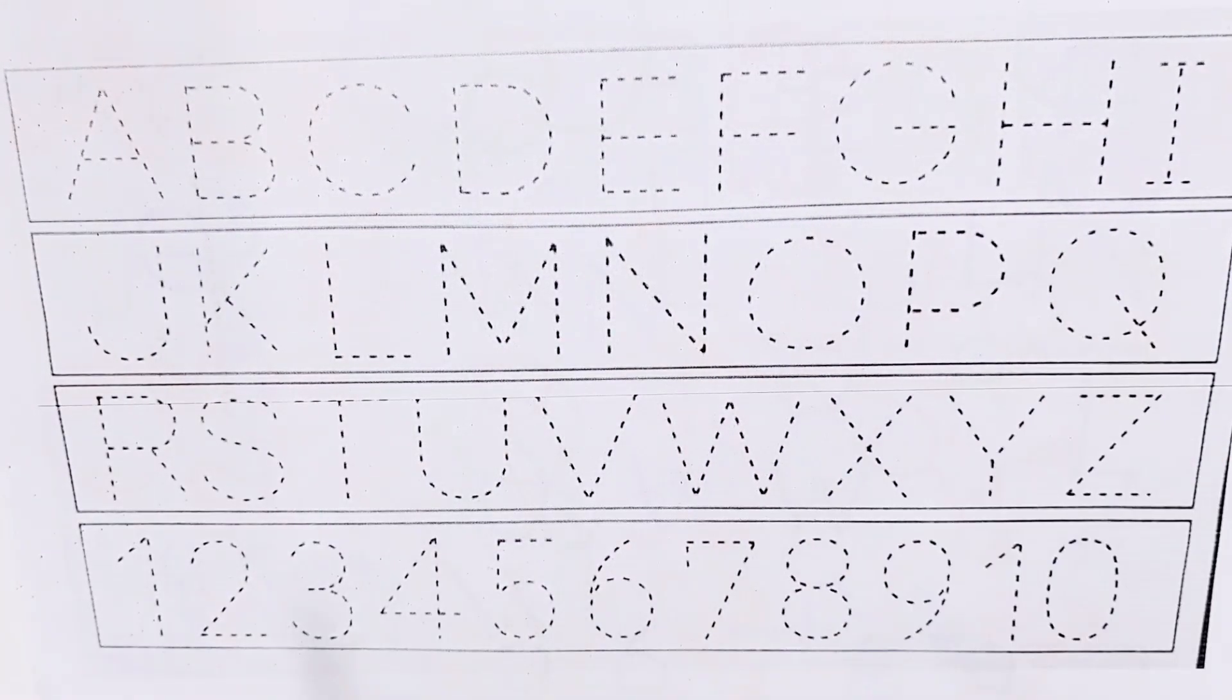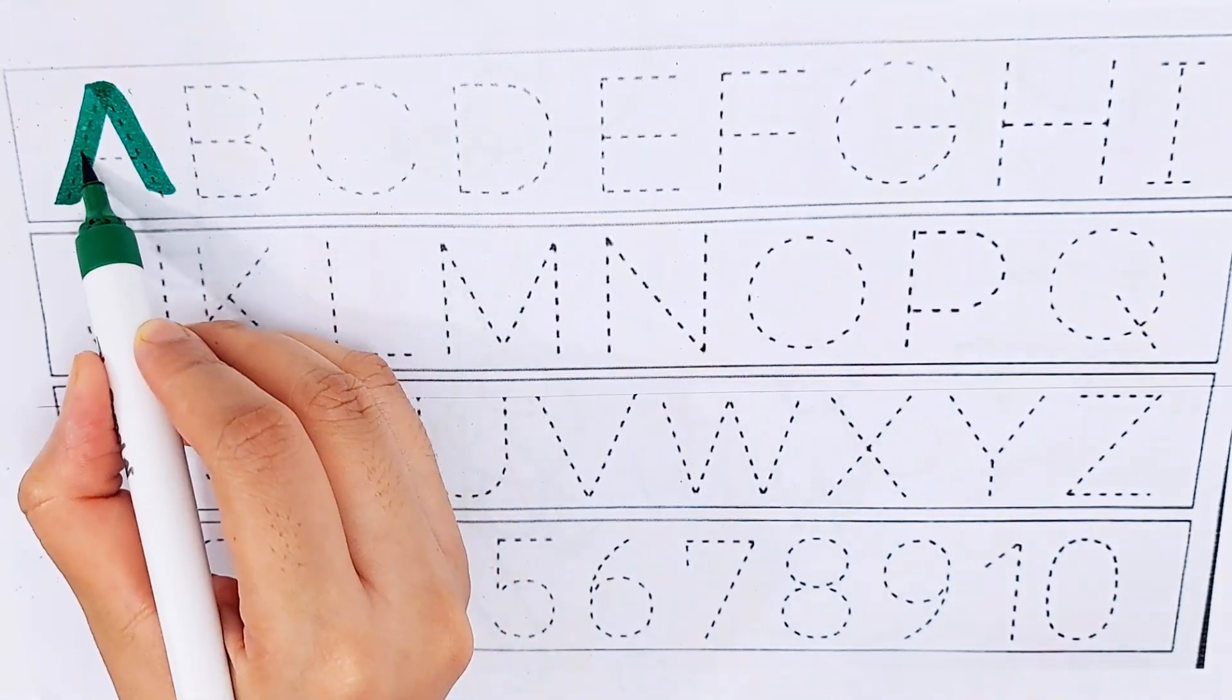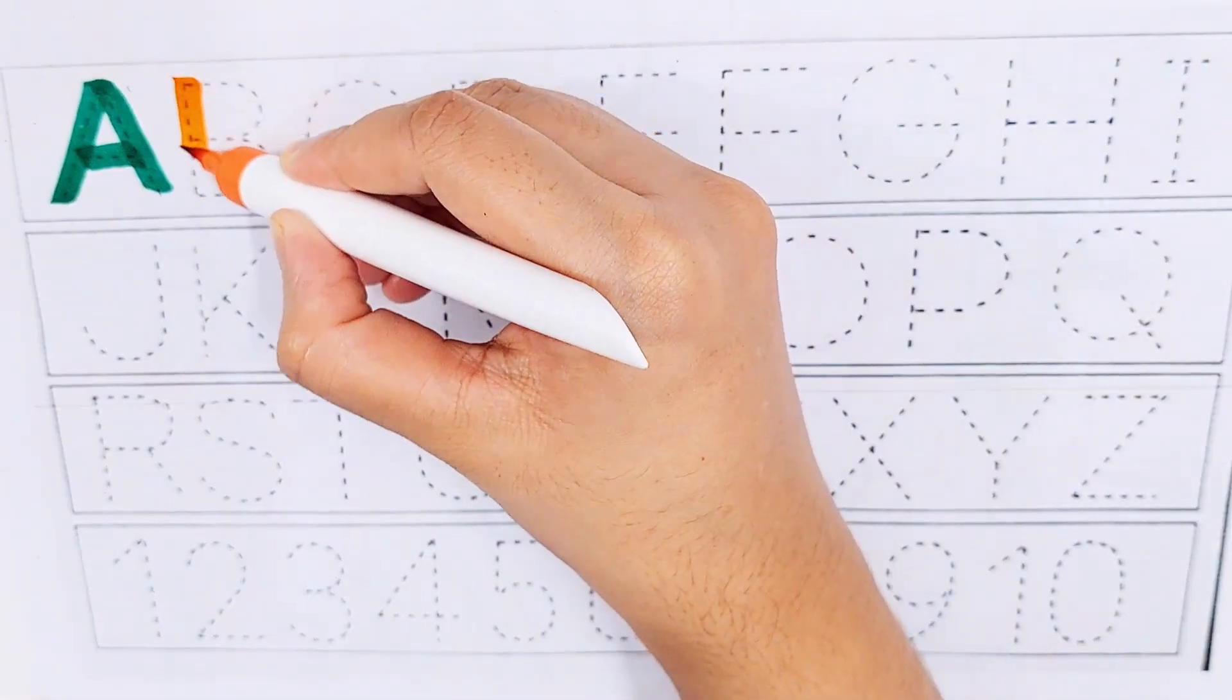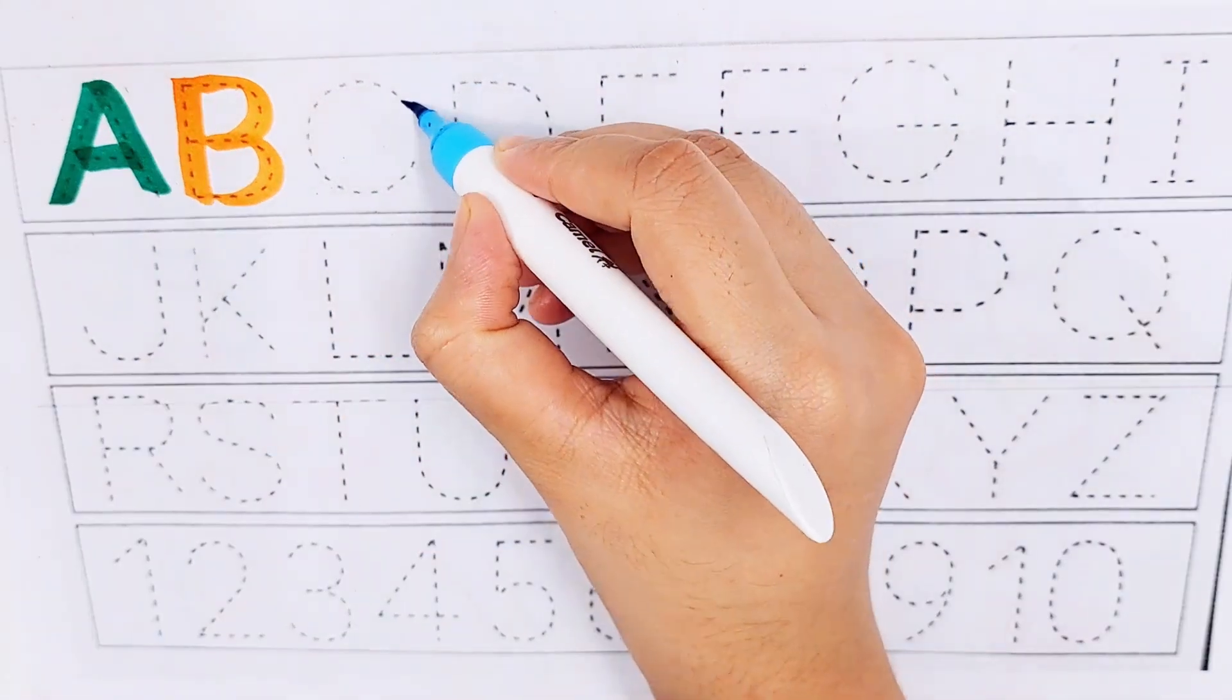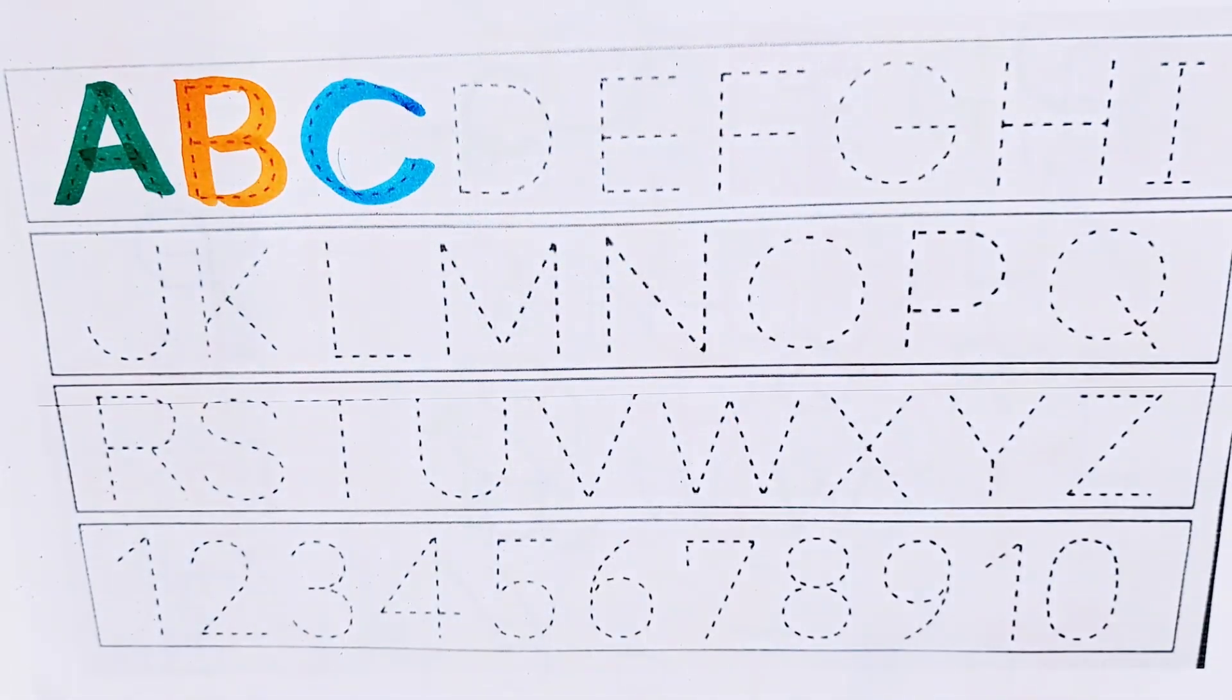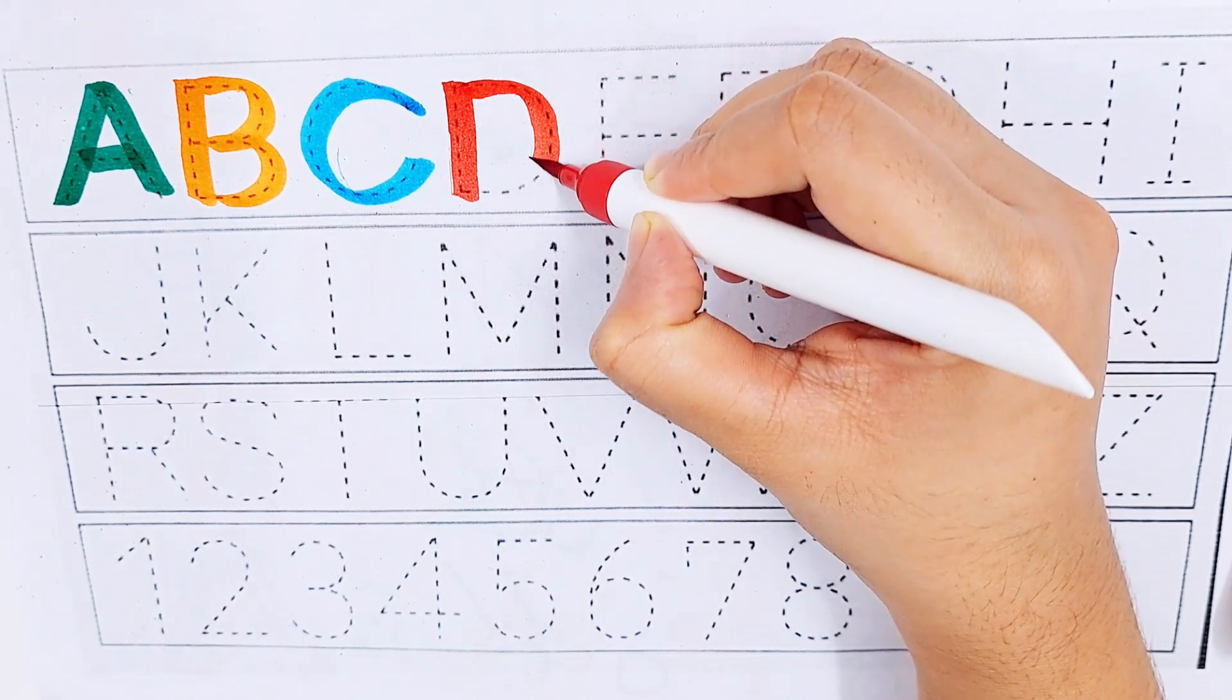Let's learn some alphabets and numbers. Dark green color, A, A for avocado. Orange color, B, B for banana. Sky blue color, C, C for cherry. Red color, D, D for dragon.